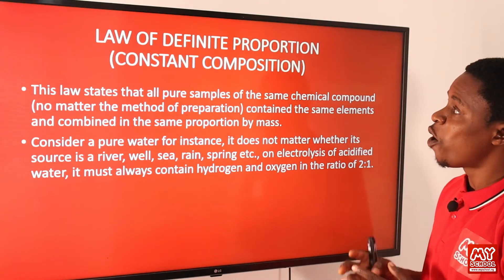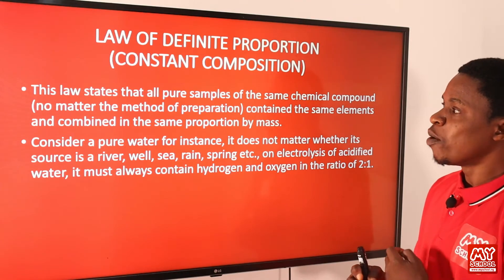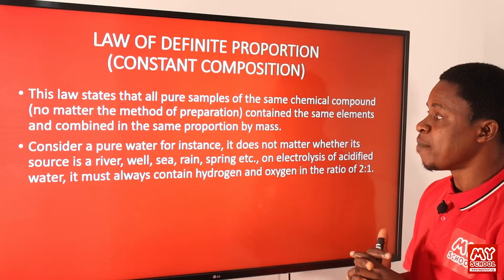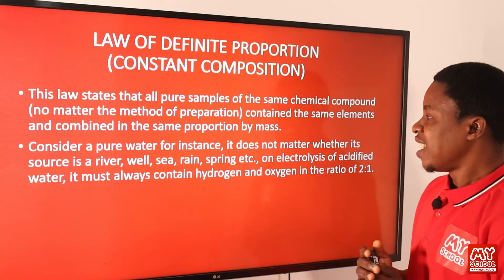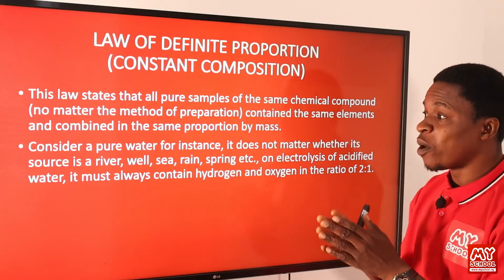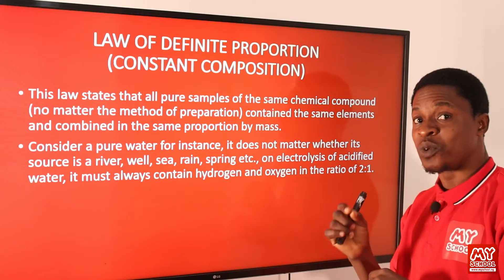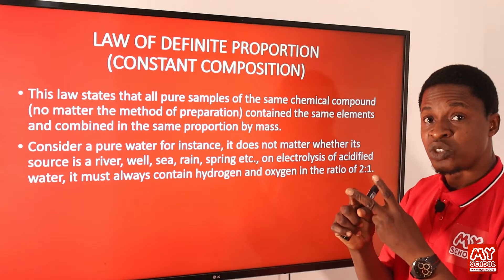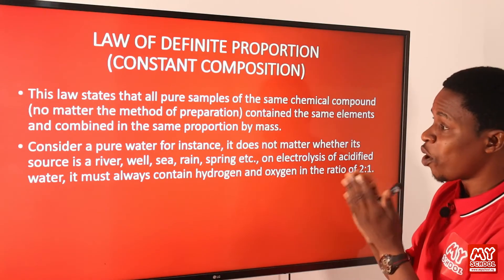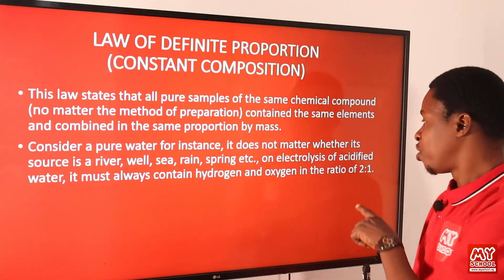The next law is the law of definite proportion, also called the law of constant composition. It states that all pure samples of the same chemical compound, no matter the method employed in preparation, must contain the same elements combined in the same proportion by mass. For instance, pure water — whether from rain, a well, the sea, or the ocean — will always contain hydrogen and oxygen. Water (H2O) always has two moles of hydrogen and one mole of oxygen, in the ratio of 2:1, regardless of its source.